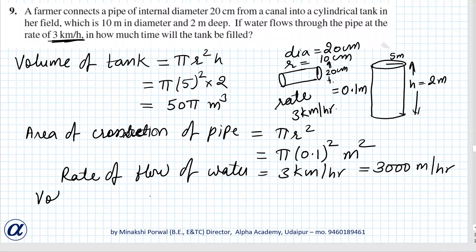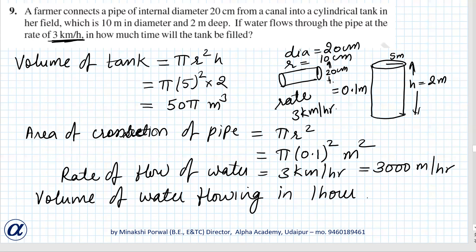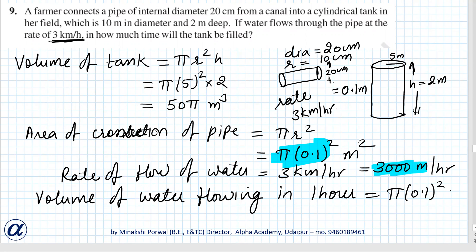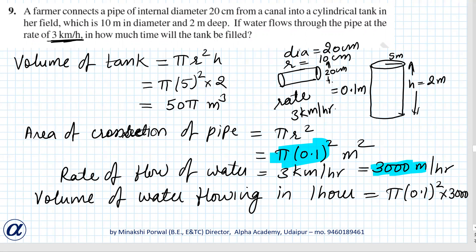So the volume of water flowing in one hour will be equal to the area of the pipe into the rate, that is equal to π into 0.1 squared into 3000. This much is actually the volume of water flowing in one hour.